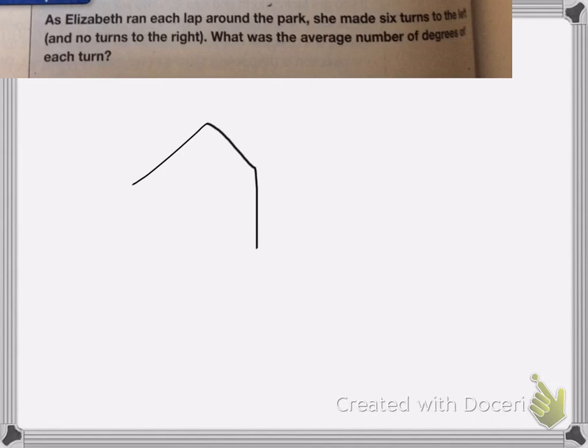Okay, so this park is in the shape of a hexagon. And that wasn't a very good hexagon. So let's try again. It's a little bit better. So this must be the park is in this shape. So we're going to look at the different turns. So let's say she's starting going in this direction. Okay, so if she's going up, she's going to make one turn here.